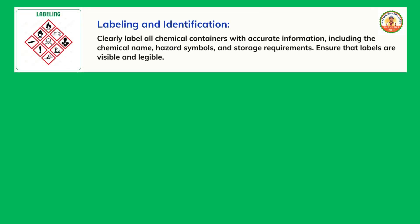Labeling and Identification: Clearly label all chemical containers with accurate information, including the chemical name, hazard symbols, and storage requirements. Ensure that labels are visible and legible.